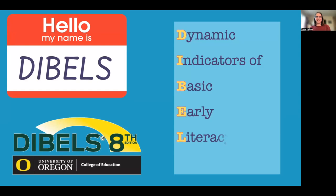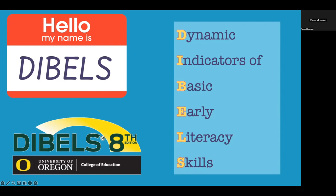DIBELS stands for the Dynamic Indicators of Basic Early Literacy Skills — so it's an assessment that looks at foundation reading skills. It's pronounced DIBELS to rhyme with 'dribbles,' which I found has resulted in lots of spelling mistakes, spelling it D-I-B-B-L-E-S, and also not a great association — but that will help you remember DIBELS, and that's how the researchers at the University of Oregon pronounce it.